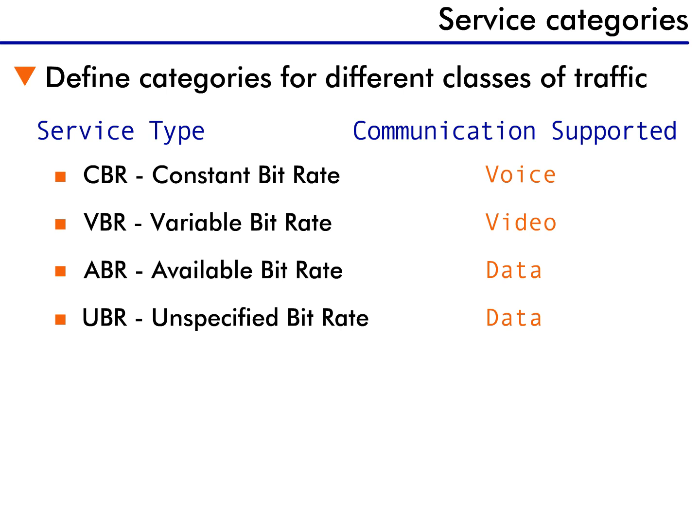Constant bitrate means a steady bandwidth allocation. Primarily, a CBR service category is used to support voice communication and is also sometimes called circuit emulation, because the service provided emulates or acts like a dedicated physical circuit.